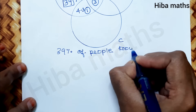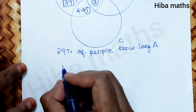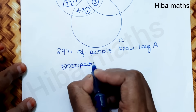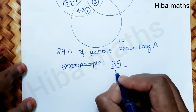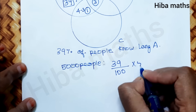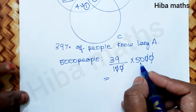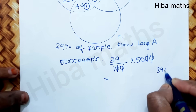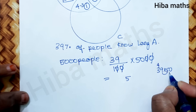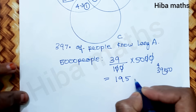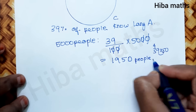For only language A total: out of 5000 people, 39% of 5000 equals 39 divided by 100 multiplied by 5000, which gives 39 multiplied by 50 equals 1950. So 1950 people know only language A.